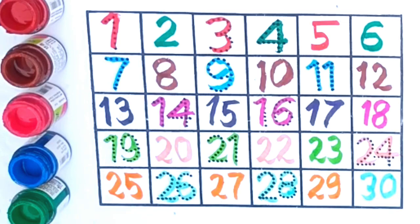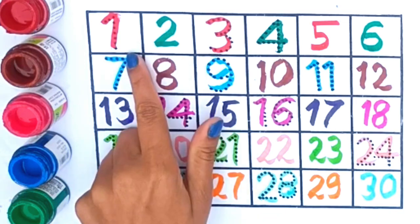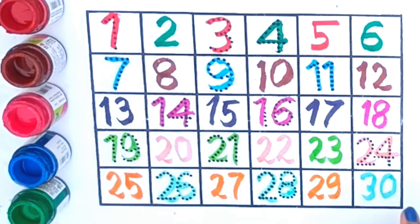These are 1 to 30 counting. Yeh hai bacchho 1 to 30 counting. Bye bye bacchho, milte hain agli video mein, dhyan rakhna apna. Bye bye.